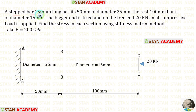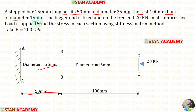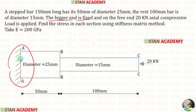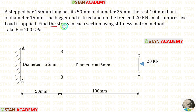A stepped bar 150 millimeters long has its first 50 millimeters of diameter 25 millimeters. The remaining 100 millimeter bar is of diameter 15 millimeters. The bigger end is fixed and on the free end a 20 kilonewton axial compressive load is applied. Find the stress in each section using the stiffness matrix method.